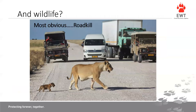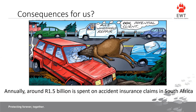The most obvious impact of transportation, particularly on roads, is what we call roadkill. The consequences for us as human beings: if you're in your vehicle and collide with a large animal, that can have serious consequences. Beside damage to the vehicle, you may be injured or tragically killed. Approximately 1.5 billion rand is spent on accident insurance claims in South Africa — a significant amount of money just through colliding with an animal on the road.